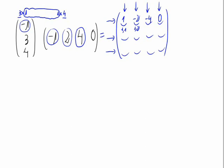Now let's go with the second line. The elements of the second line will be: element 2,1 (line 2, column 1), element 2,2 (line 2, column 2), element 2,3 (line 2, column 3), and element 2,4 (line 2, column 4).